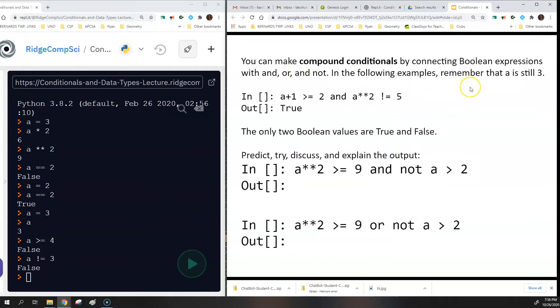So you can also do compound conditionals, meaning that you can have an AND or an OR in between the two conditionals or the two conditions. Let me clear this. And let's reset A back to 3. And now in order to check, is A plus 1 greater than or equal to 2? And is A to the second power not equal to 5? Then this will return true because A squared is not 5 and A plus 1 is greater than or equal to 2. So this word AND here tells you that both things have to be true in order for it to return true.